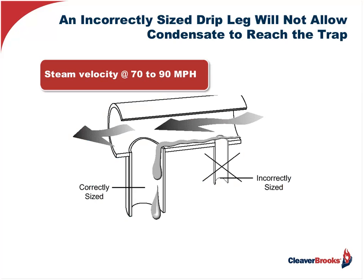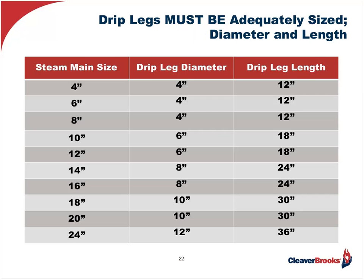So what do we do about it? First, we have to capture condensate properly. If we're going 70 to 90 miles per hour down a length of pipe and pushing some condensate, and you've got a drip pocket, if it's not properly sized, that condensate is going to whisk right across it. So we have to have a properly sized drip leg or drip pocket to catch that condensate and then trap it out. Overall rule of thumb: for steam lines 4-inch to 8-inch, you're talking a 4-inch drip pocket minimum — many engineers prefer going full size from 4-inch through 8-inch.